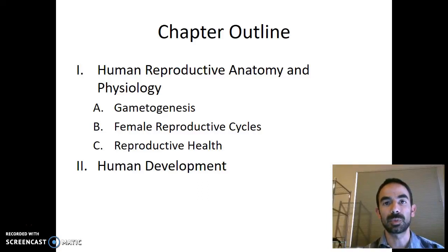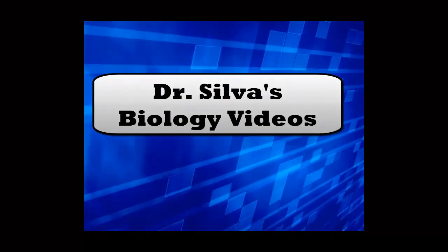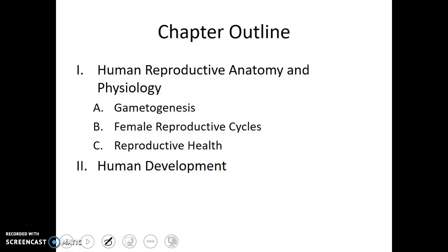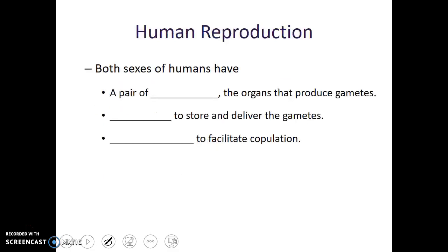Now that we've learned about the concept of reproduction, we're going to look specifically at the anatomy and physiology of the human reproductive systems. As we discuss the human reproductive system, we will talk about the differences between the anatomy and physiology of the male and female reproductive systems, but before we do that, first we are going to talk about the similarities.